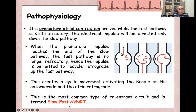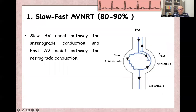This is called slow-fast AV nodal re-entry — anterograde from above downward through the slow pathway, and retrograde through the fast pathway. This is the first type of AV nodal re-entry tachycardia, the slow-fast type, and it is the most common, appearing in 80 to 90 percent of cases provoked by premature atrial contractions.